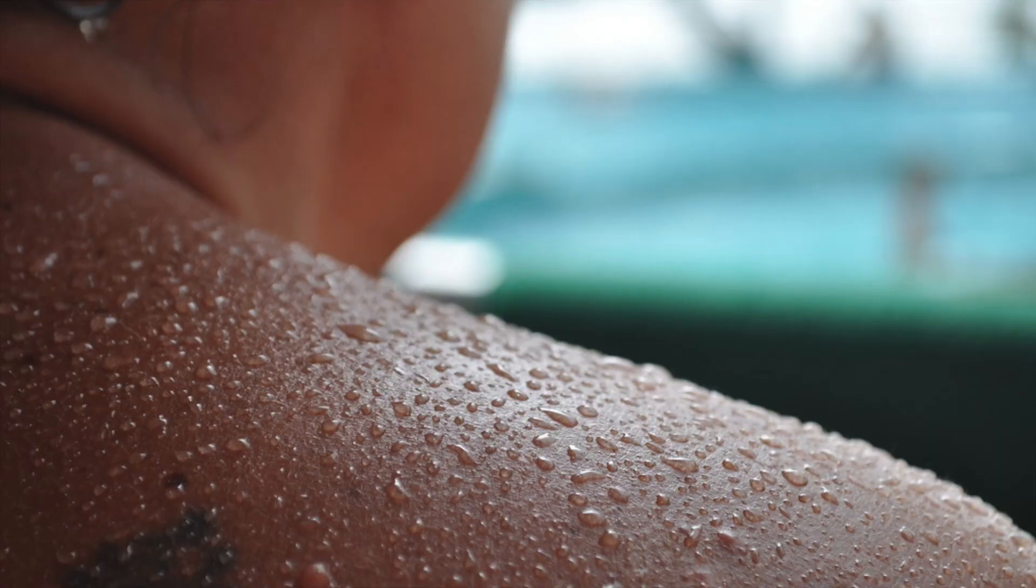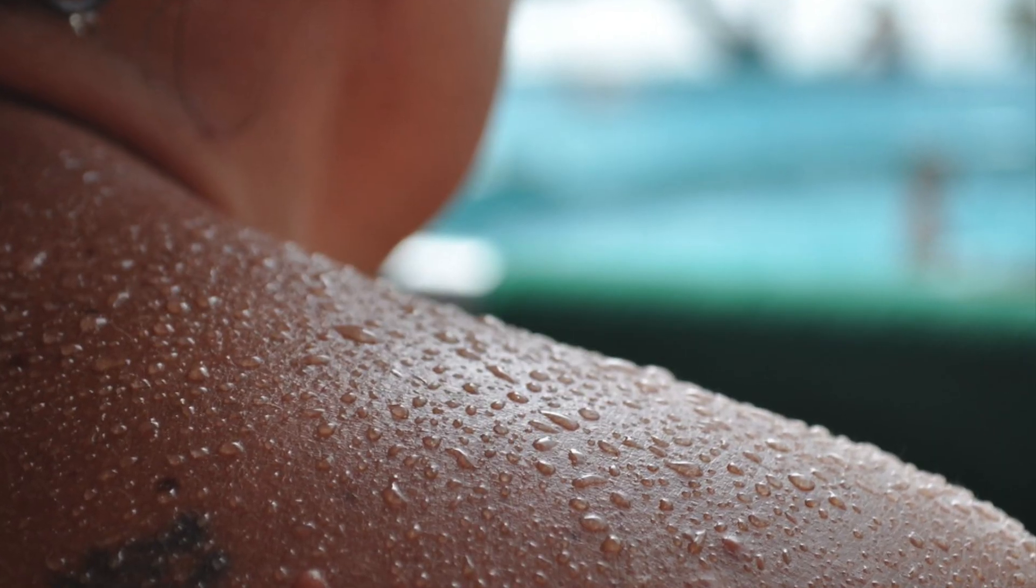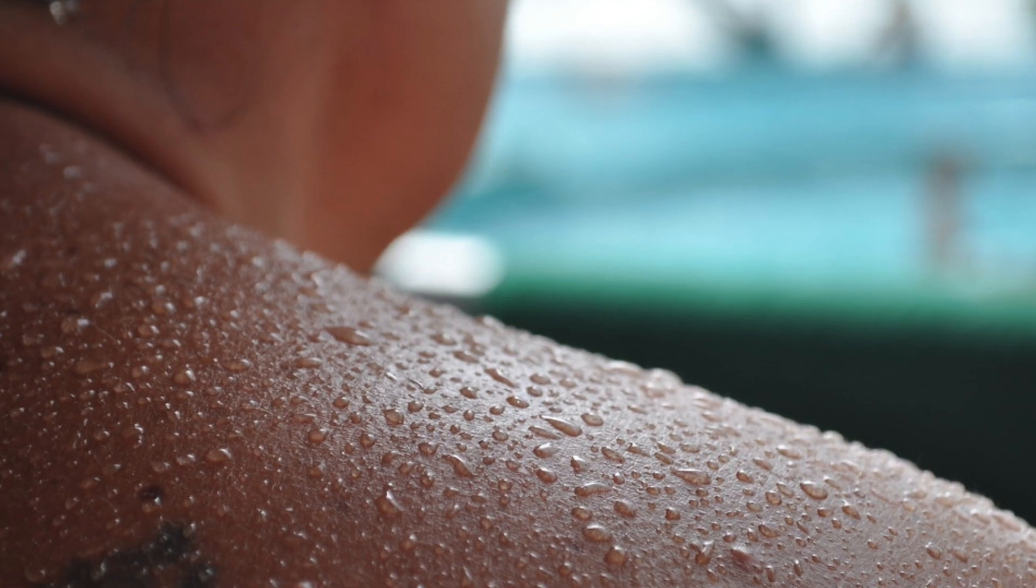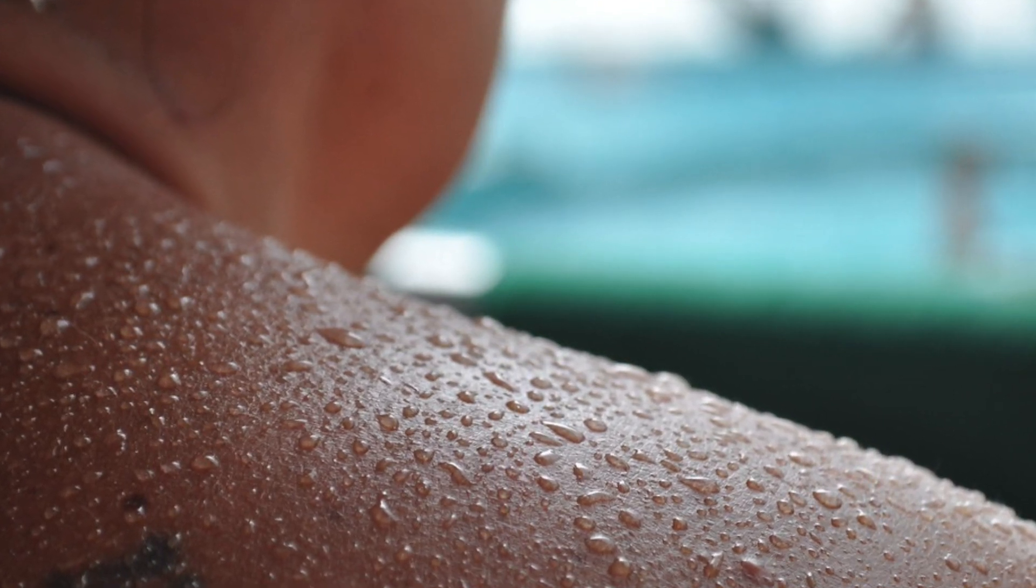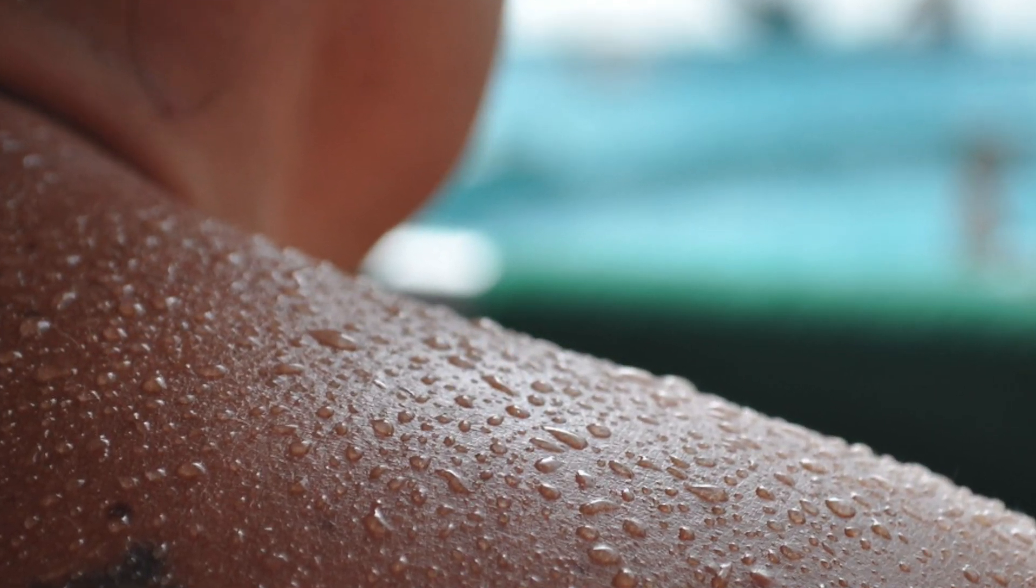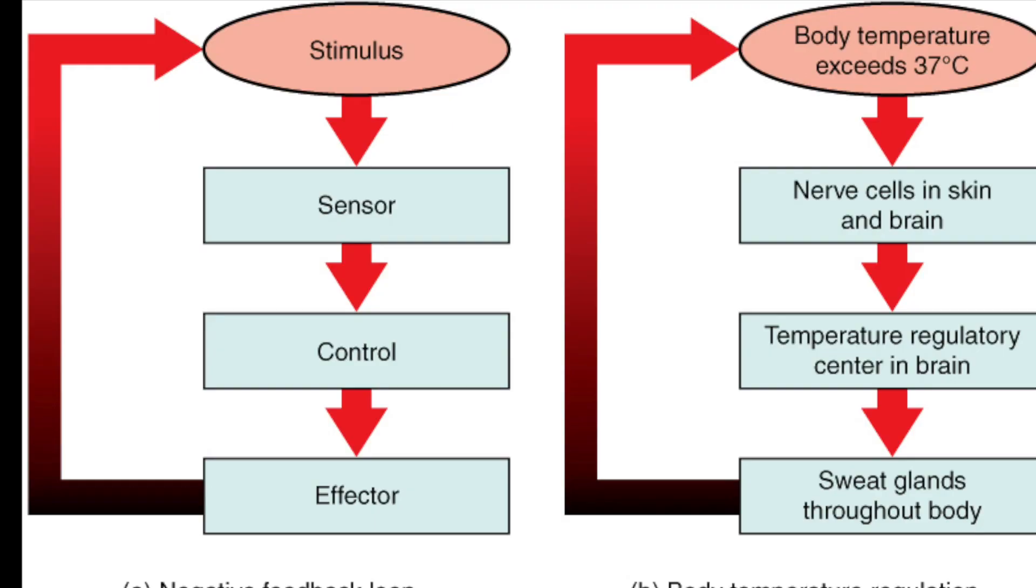The control system which controls all these internal conditions needs certain key features to function. First, there are receptors. These are cells that detect changes in the internal and external environment, and these changes are known as stimuli.